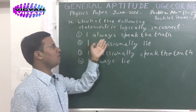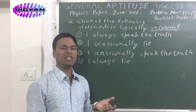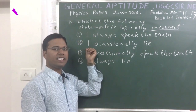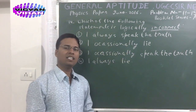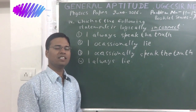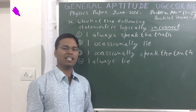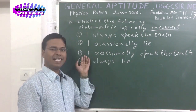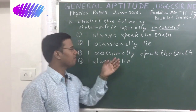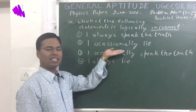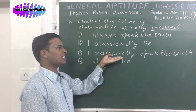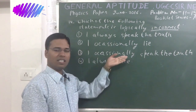The first statement is 'I always speak the truth' — a person can always speak the truth and say this, so this is correct. Statement 2: 'I occasionally lie' — it is possible that some person logically speaks false statements and then says 'I occasionally lie.' Statement 3: 'I occasionally speak the truth' — this is also possible. It is the vice versa situation of statement 2; the same person can make this statement too.